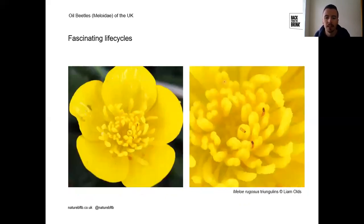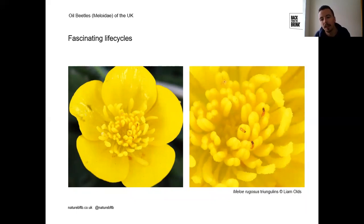For the smaller triunglids — the rugged, short-necked and Mediterranean — spotting them is more of a challenge. A buttercup image shows three tiny rugged oil beetle triunglids that are very easy to miss. A magnifying glass held over the flower is a good way of spotting these small triunglids.